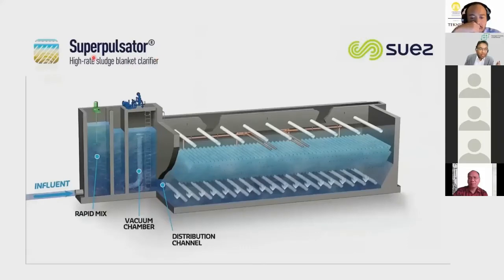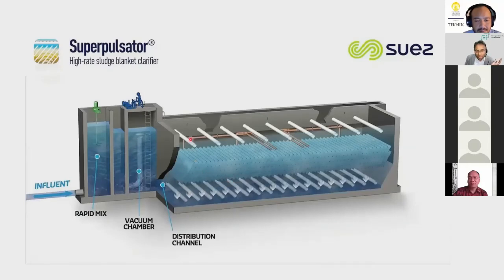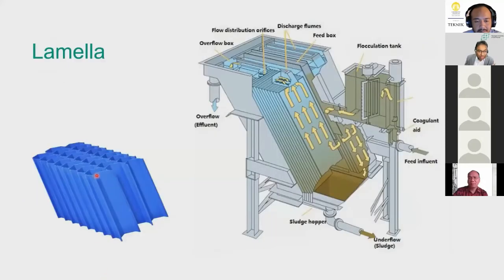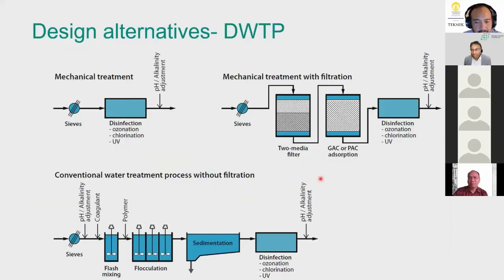The professor shows a figure of the Super Pulsator from Suez, which features lamellas and a scraper for sludge removal. He notes the sedimentation tank covered with plates can appear similar to a flotation system in some configurations. These represent the evolving design alternatives in modern treatment plants.